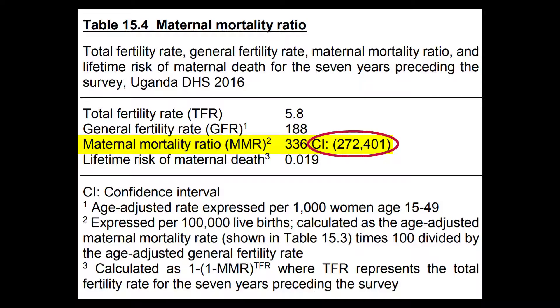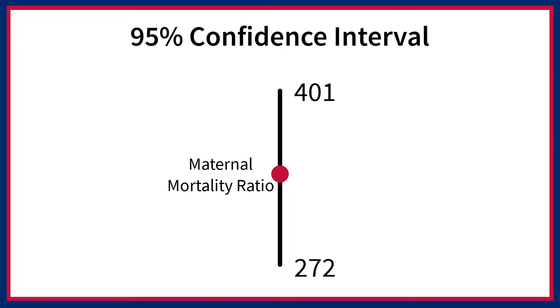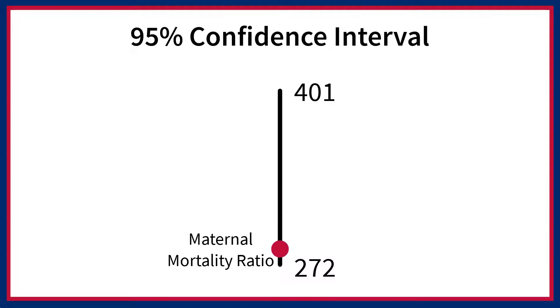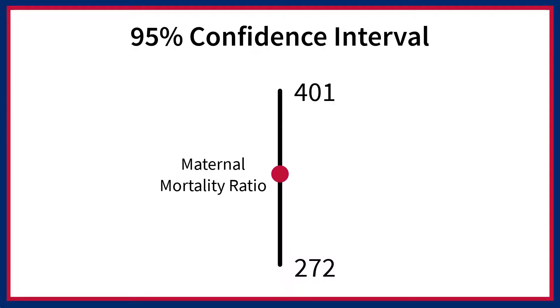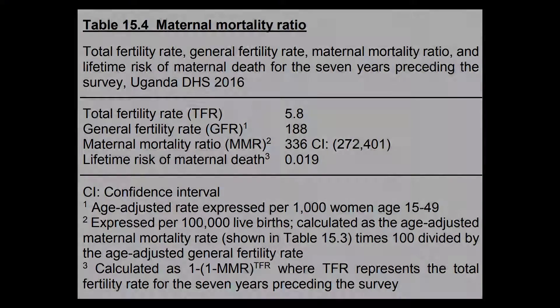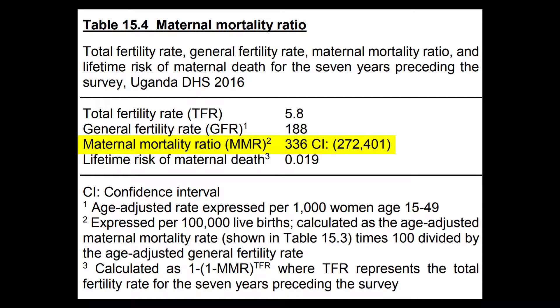This means that if every woman in Uganda were interviewed, it's very likely that the maternal mortality ratio would be somewhere in the range of 272 to 401 deaths per 100,000 live births. To learn more about confidence intervals and interpreting trends, check out our video on this topic. You may have noticed that the MMR is only estimated at the national level — it is not presented by background characteristics such as region, because the number of women that would need to be interviewed to produce such estimates is too large.